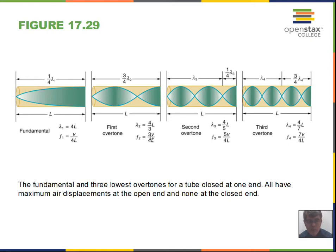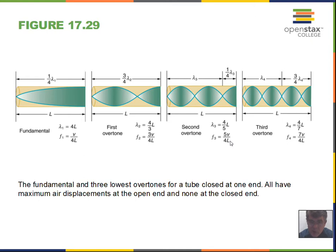Going to the next picture: we have five quarter-wavelength segments — quarter wavelength, second, third, fourth, fifth — so five of these quarter-wavelength segments equals L. Multiplying by 4 and dividing by 5, the wavelength is four-fifths times L. The frequency equals velocity divided by wavelength, and this produces a factor of 5 times the fundamental frequency. So we call these harmonics: the fundamental, the third harmonic at 3 times the fundamental, and the fifth harmonic at 5 times the fundamental frequency.